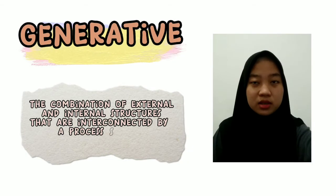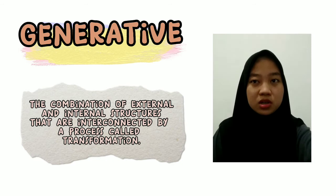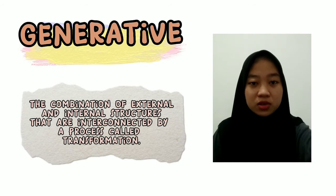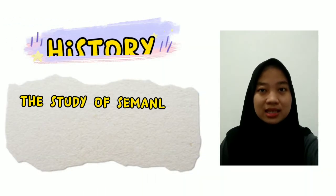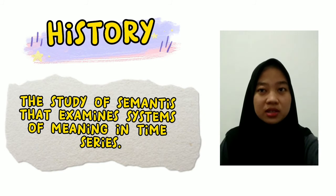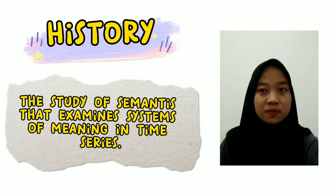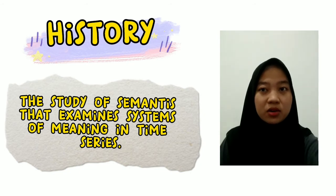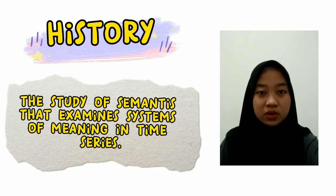The fifth is narrative. Narrative is the combination of external and internal structures that are interconnected by a process called transformation. The sixth is history — the study of semantics that examines the system of meaning in time series. This historical semantic study emphasizes the study of meaning over time, comparing words based on period or between words at certain times with words in other languages.